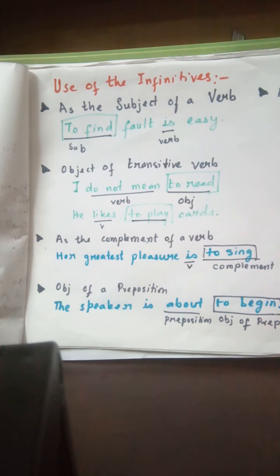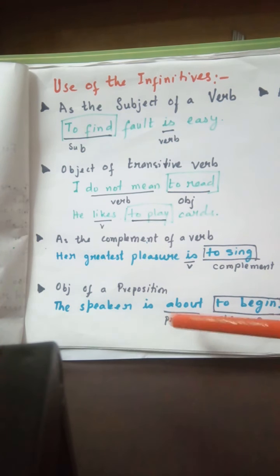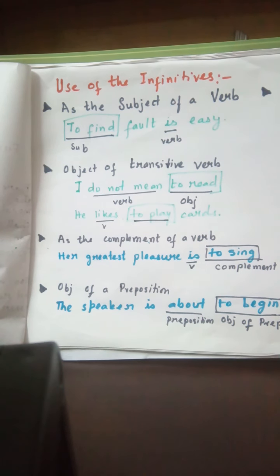The next usage is as the object of a preposition. When we denote the position of an object or person, or state the relationship of the object with respect to other things in the sentence, we use a preposition. Two-infinitives can form the object of a preposition. For example, 'the speaker is about to begin' — 'about' is the preposition, and 'to begin' denotes its relation with the other things in the sentence, making it the object of the preposition.